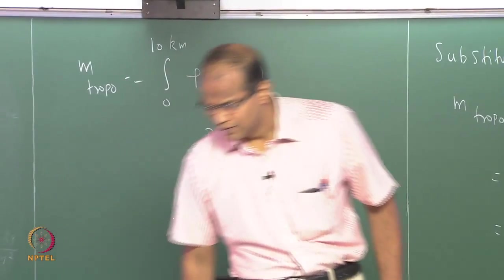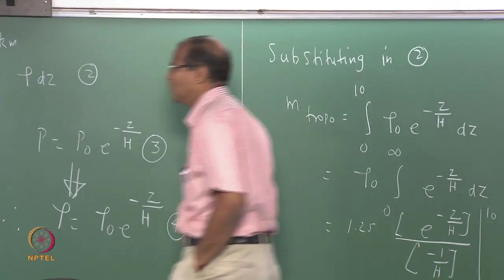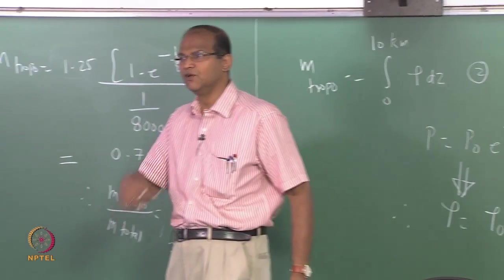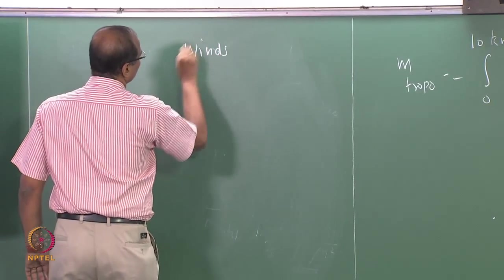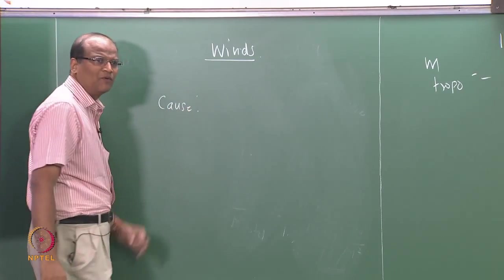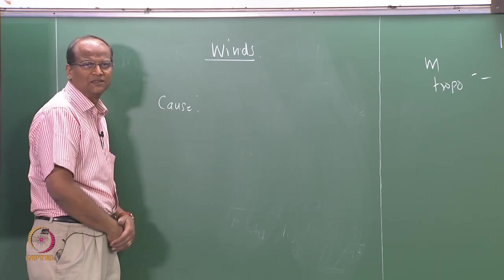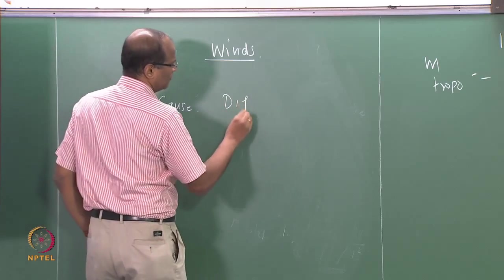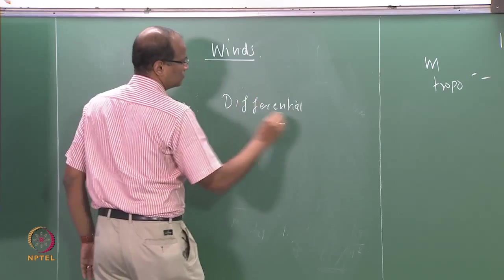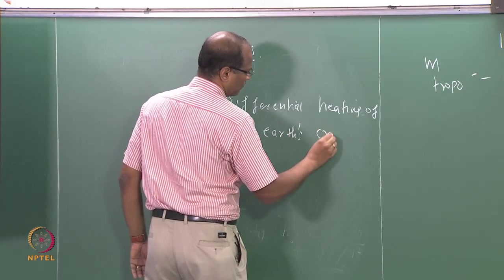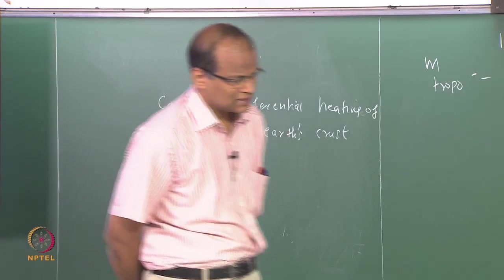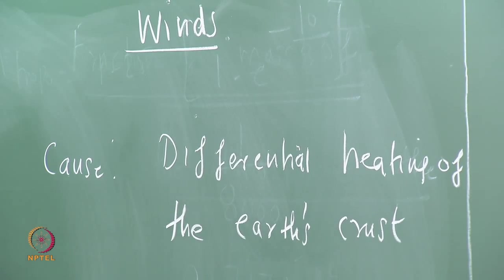We are still continuing with the introduction. The next important player is basically winds. After the vertical structure, you look at the winds in the atmosphere. What causes winds? Differential heating of the Earth's crust. The differential heating of the Earth's crust is the important reason for the generation of winds, and winds are generated at multiple scales.